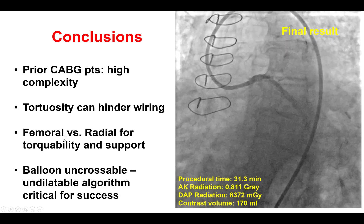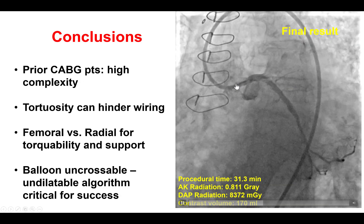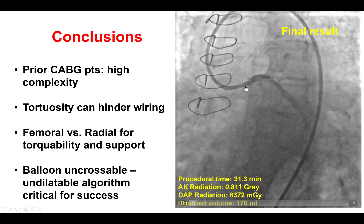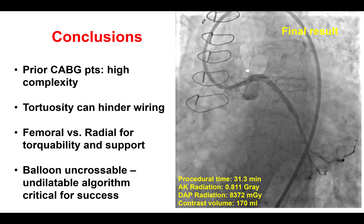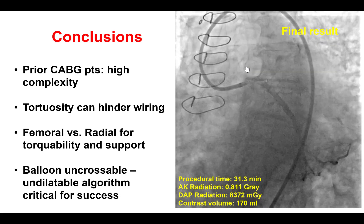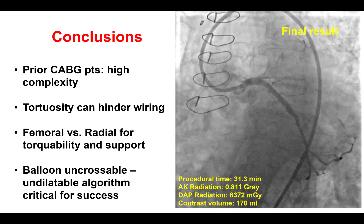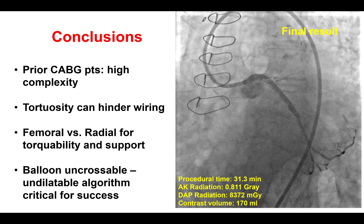Third, regarding the use of femoral versus radial access: in this case, using radial access to engage the left main while maintaining guide position in the SVG did not work. Radial access sometimes provides less support, so being flexible and switching to an alternative access site can facilitate success and make the case more efficient. Fourth, it is important to have an algorithm for balloon-undilatable lesions. If calcium is really severe, extensive, and especially superficial, upfront atherectomy is probably better. If the calcium is less severe, or if there is significant tortuosity and small vessel size, trying a balloon first is a good option, and if that fails, switching to atherectomy is a reasonable approach.